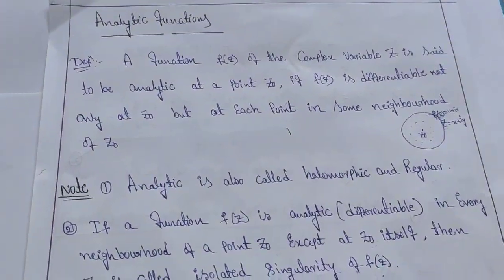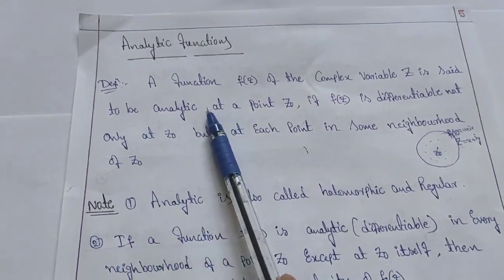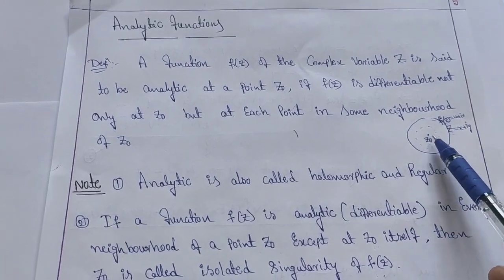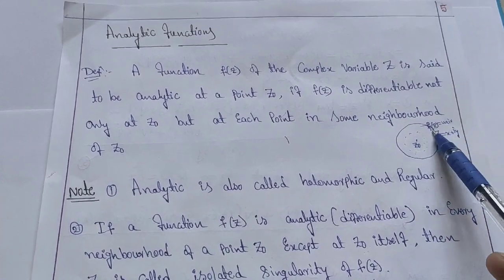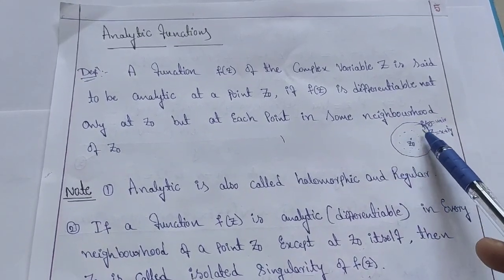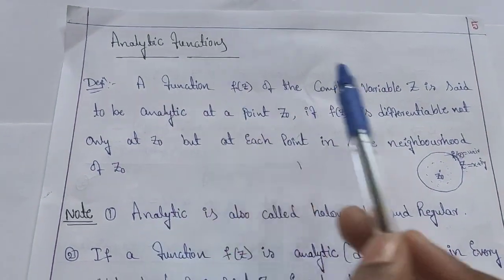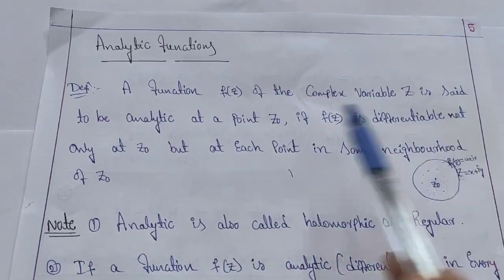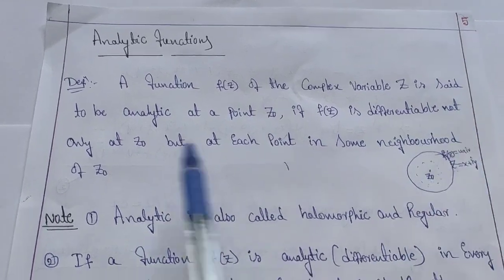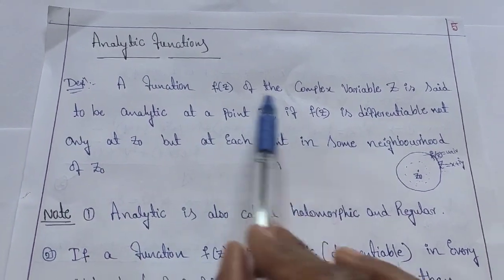The next concept is analytic functions. Consider a function f of z for the complex variable z and a center point z naught. If this function is differentiable not only at the center point but also at all points in some neighborhood of z naught, then we say this function is analytic. A function f of z is said to be analytic at a point z naught if f of z is differentiable at z naught and at each point in some neighborhood of z naught.